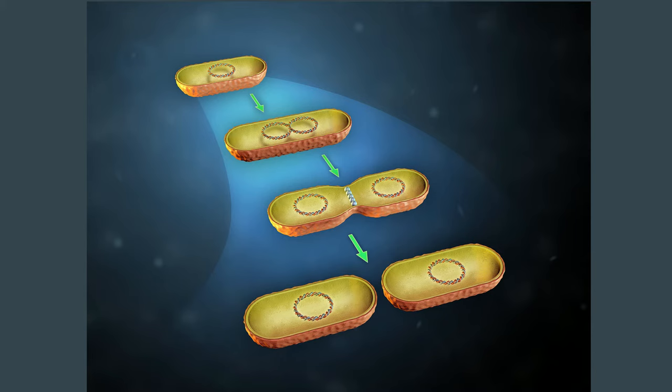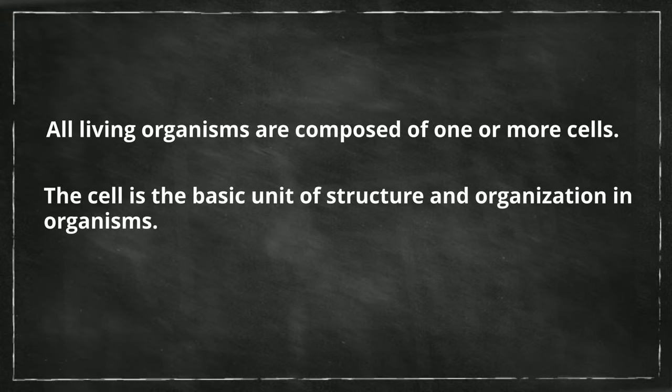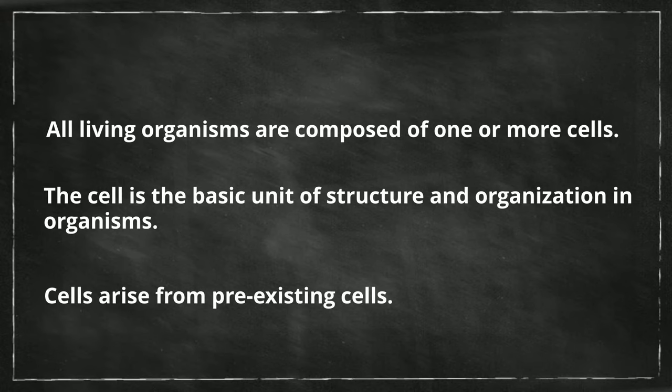So, the cell theory has three tenets. 1. All living organisms are composed of one or more cells. 2. The cell is the basic unit of structure and organization in organisms. 3. Cells arise from pre-existing cells.